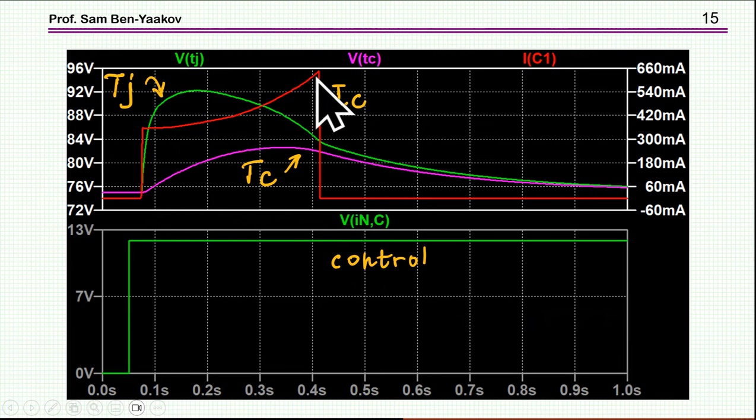And again, because we are using a non-linear capacitor, it starts low, and then it goes up. Now, the green is the junction temperature. This is very nice, which is calculated on the fly as the simulation goes on. You see, we start with 75 degrees, this is the starting point, the ambient temperature, you might say.